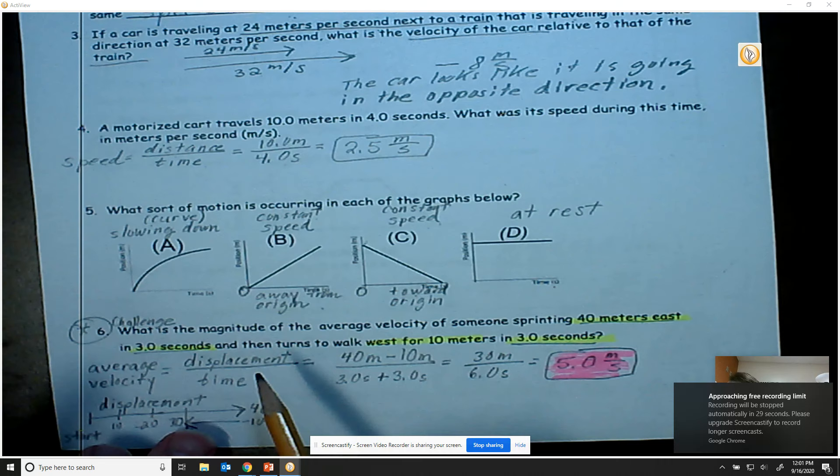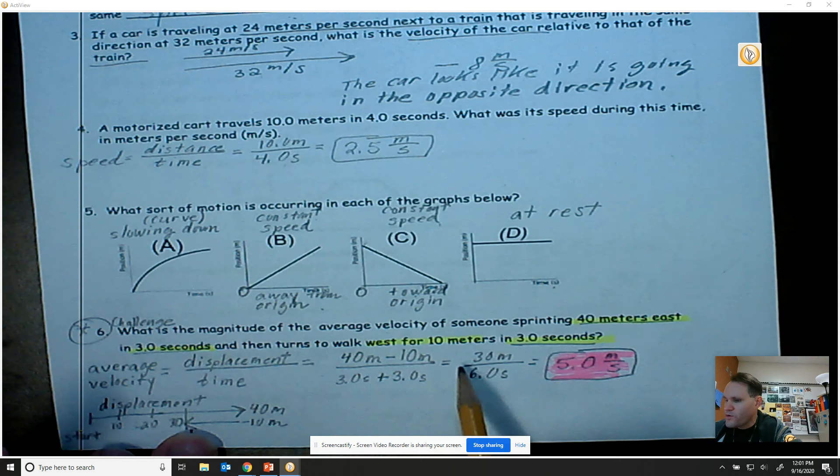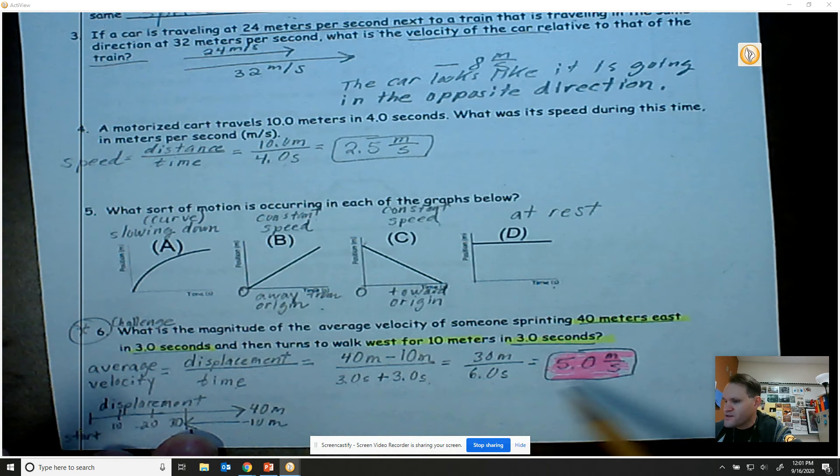And then you get the total time of three seconds plus three seconds to six seconds. So 30 meters divided by six seconds is going to be a velocity of five meters per second. I hope that helps you with the front side, the first side of the study guide.